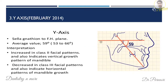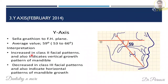The Y-axis is the angle between Sella-Gnathion and the Frankfort horizontal plane. The mean value is 59 degrees, with an average range of 53 to 66 degrees. It is increased in class 2 or a vertical growth pattern, and decreased in class 3 facial patterns or a horizontal growth pattern.